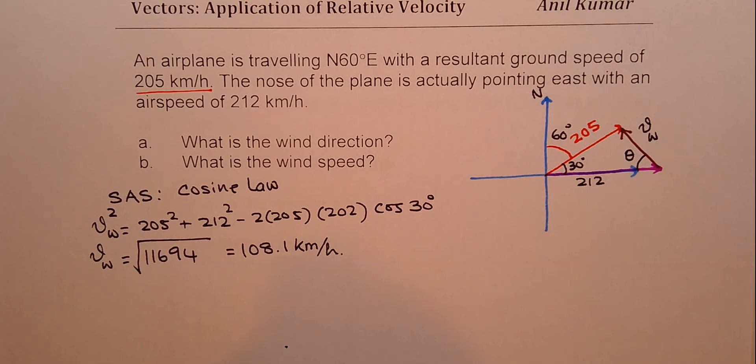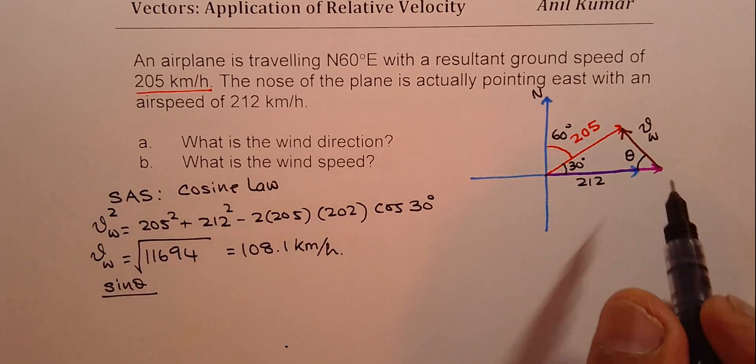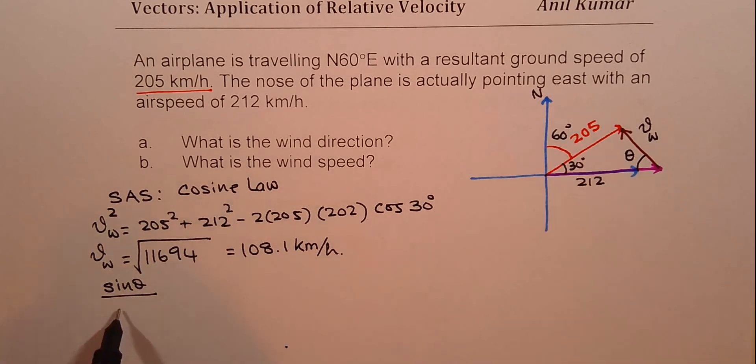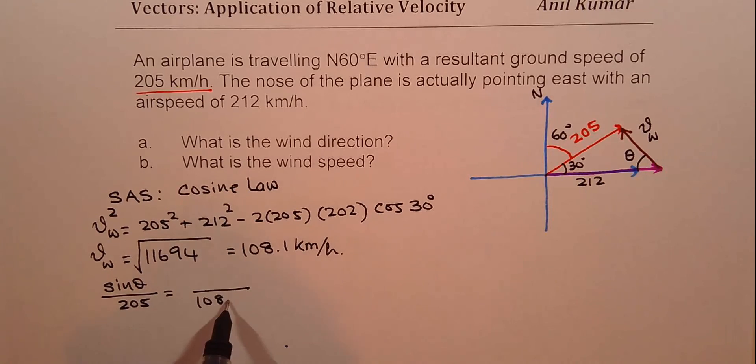So in that case, sine theta over 205 is equal to what we calculated, wind velocity of, we will write in denominator, wind velocity of 108.1 over the angle of 30 degrees, sine of 30 degrees.